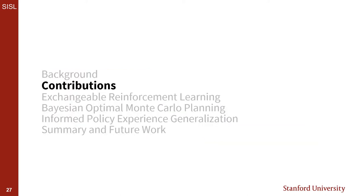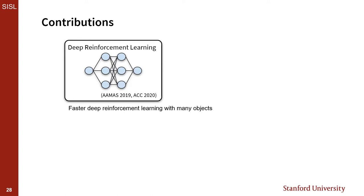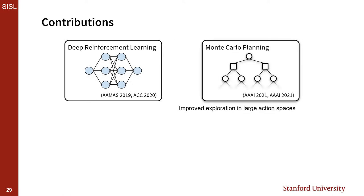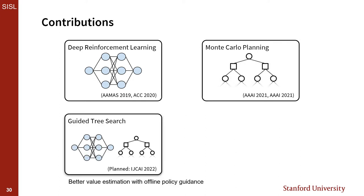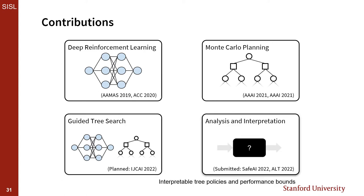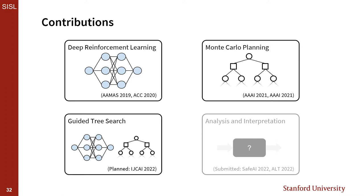Now that we have some background on sequential decision-making, I'll outline the contributions presented in today's work. The first contribution is in deep reinforcement learning—a method to conduct deep RL more efficiently on tasks with many different interacting objects. The second is in Monte Carlo planning—a method to more efficiently explore tasks with many actions available at every step. Next, I'll present contributions combining deep RL and Monte Carlo planning to guide tree search using an offline policy. The last area is analysis and interpretation.